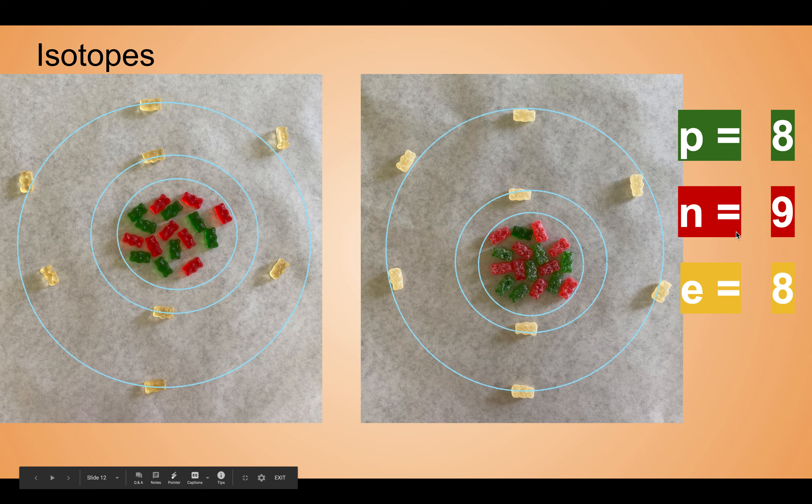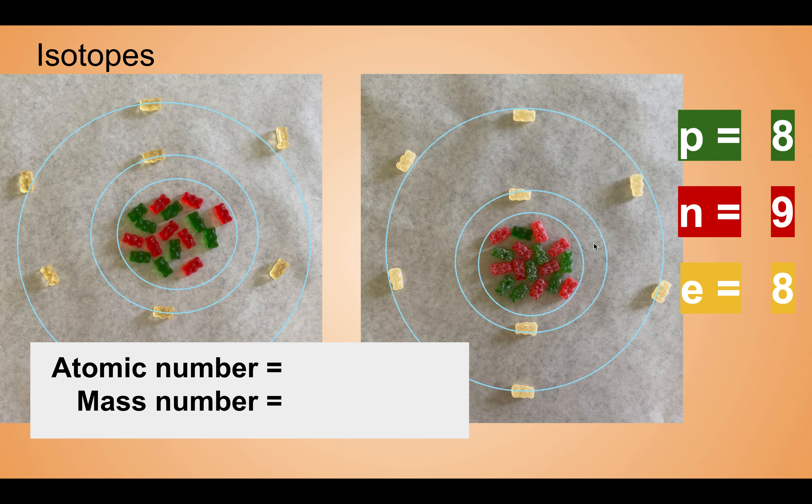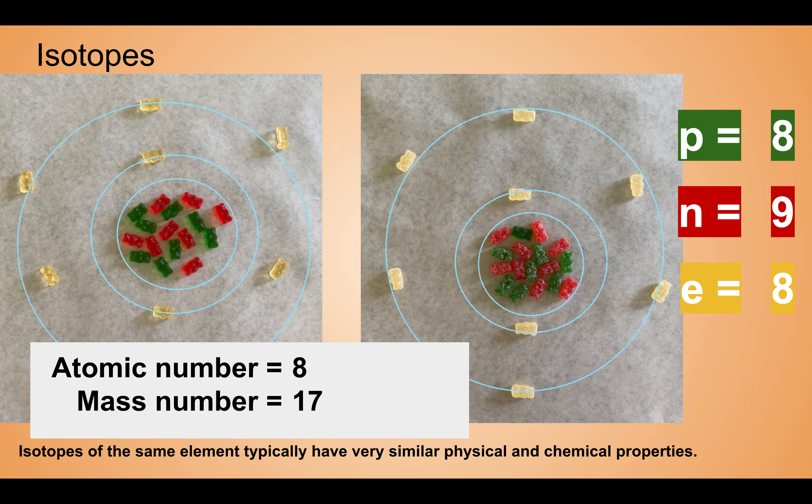Yep, we've got one extra. And electrons, we've got eight. Remember, electrons aren't going to change either. Protons and electrons aren't going to change, we just got one extra neutron. So what does that end up changing - the atomic number or the mass number? Atomic number stays the same at eight. Mass number changes. It was 16 before because we had eight and eight, but it changed to 17 because eight plus nine is 17.